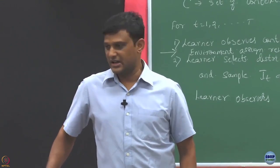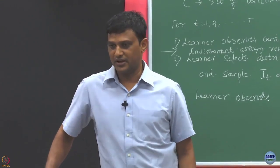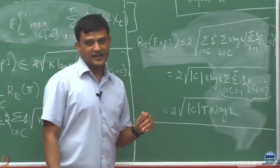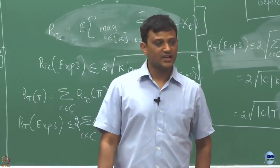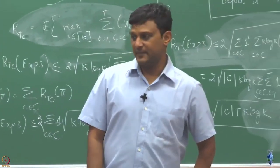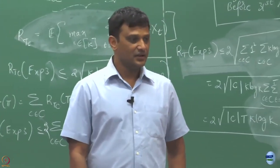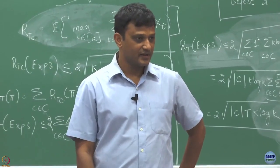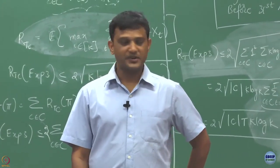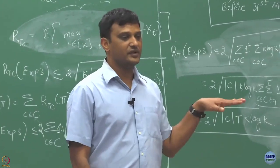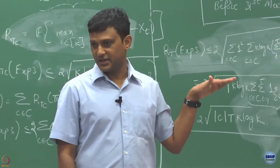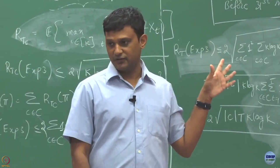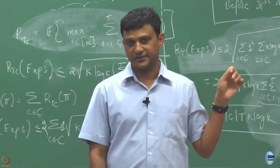We have to think a bit more here. So for that, let us look for some special cases — like the way we did in linear bandits where we assumed that mean rewards are linear — where we will be able to bring down this dependency on the cardinality of the context set.